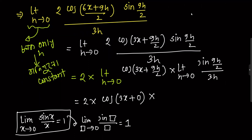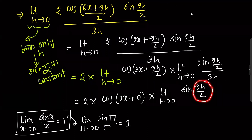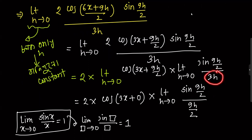So limit h tends to 0, sin 9h divided by 2. Here sin box is sin of 9h divided by 2, and box is 9h divided by 2. We apply the standard limit with box equal to 9h by 2.